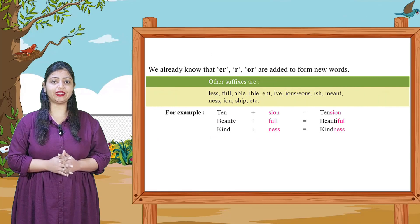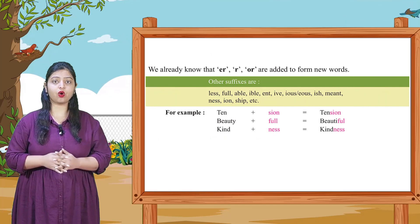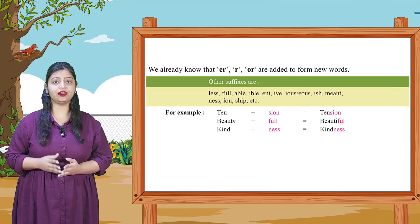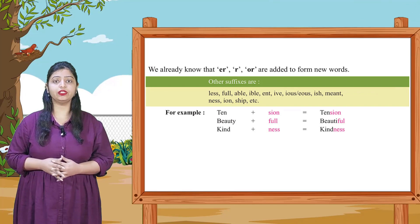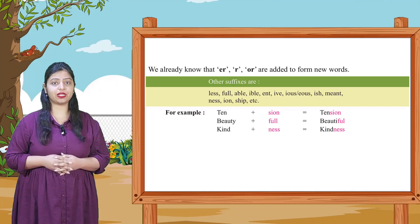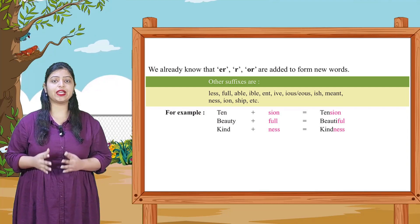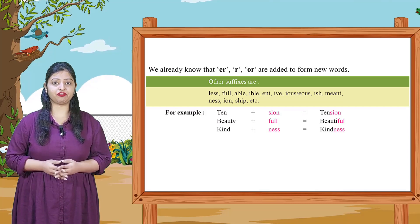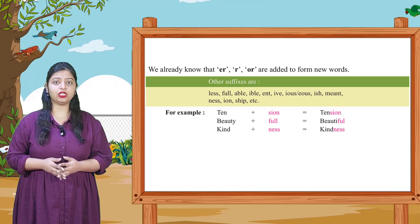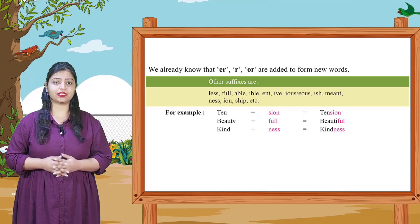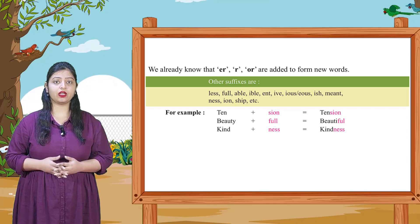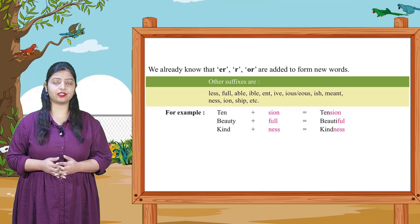We already know that -er, -or are added to form new words. Other suffixes include: -less, -ful, -able, -ible, -ent, -ive, -ious, -eous, -ish, -ment, -ness, -ion, -ship, etc.